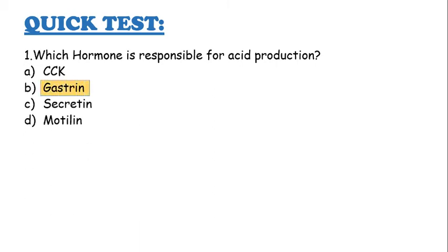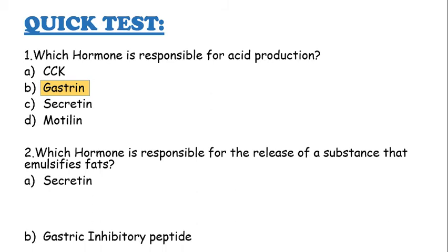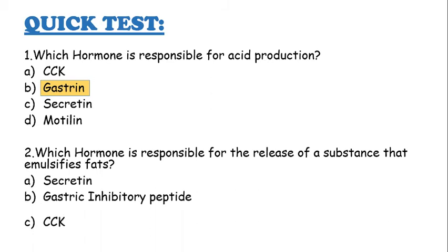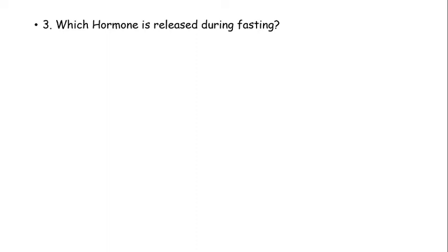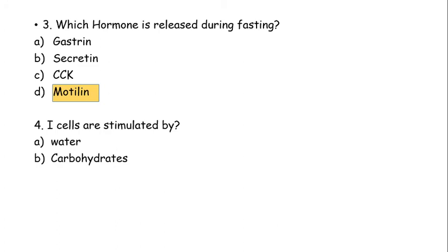Quick test: Which hormone is responsible for acid production? Cholecystokinin, gastrin, secretin, or motilin? The answer is gastrin. Which hormone is responsible for the release of a substance that emulsifies fats? Secretin, gastric inhibitory peptide, CCK, or gastrin? The answer is CCK. Which hormone is released during fasting? Gastrin, secretin, CCK, or motilin? The answer is motilin.